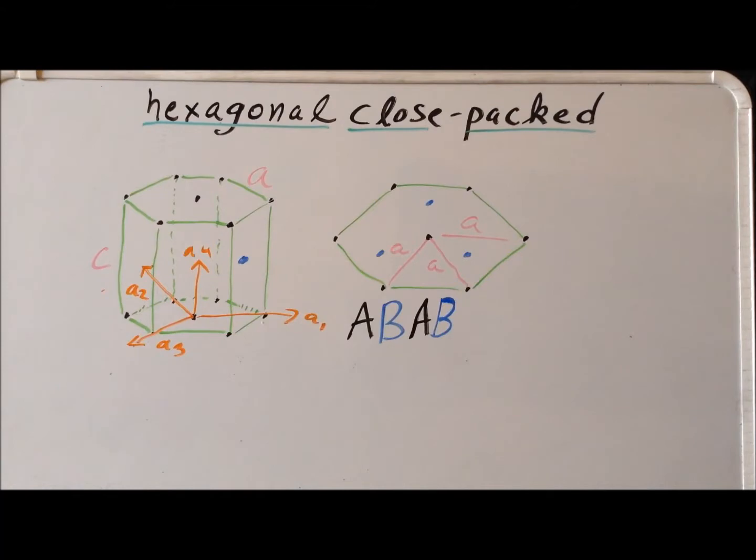Recall that the stacking pattern for the face-centered cubic, cubic close-packed, was A, B, C, A, B, C. So while hexagonal close-packed and FCC have equal efficiency at packing, the way that they are packed is slightly different.